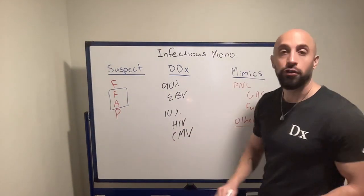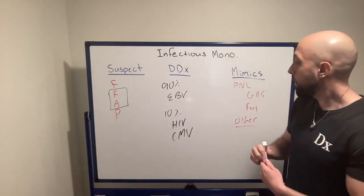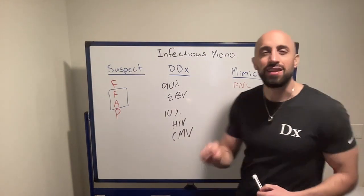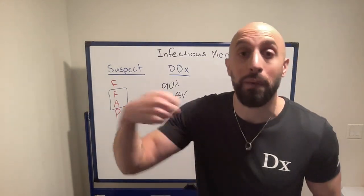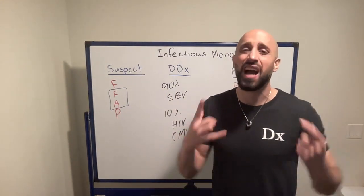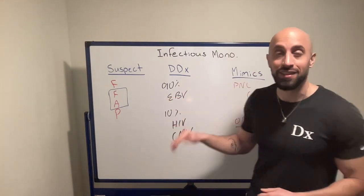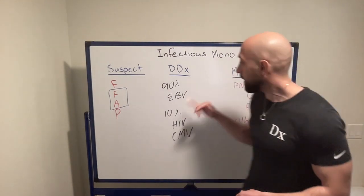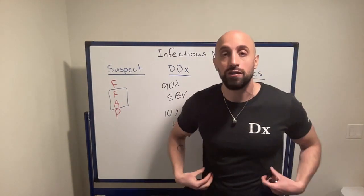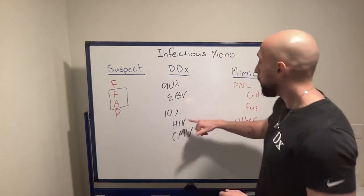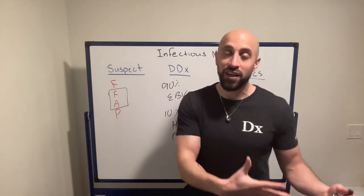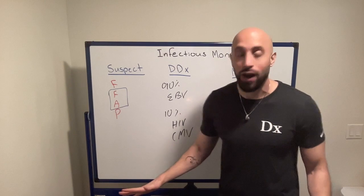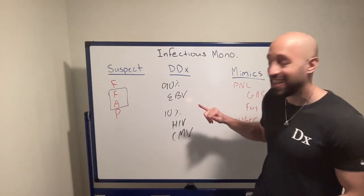If you know the illness script for these, you can even prioritize amongst those causes. For example, HIV may have a rash. EBV is less likely to have a rash unless the patient has been exposed to a penicillin antibiotic — there's a transient hypersensitivity reaction that occurs in these patients. In fact, my friend received amoxicillin thinking it was bacterial pharyngitis, then a few days later developed a diffuse macular and papular rash. But if you don't have antibiotic exposure and the patient has a rash with infectious mononucleosis, you have to be concerned for HIV — though even without the rash, it's still in the differential and should be ruled out.